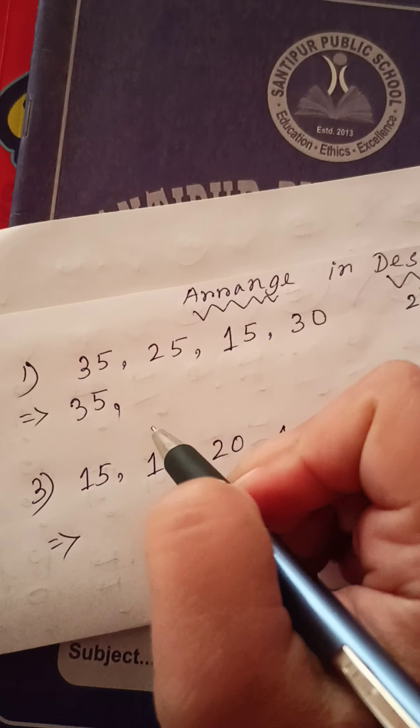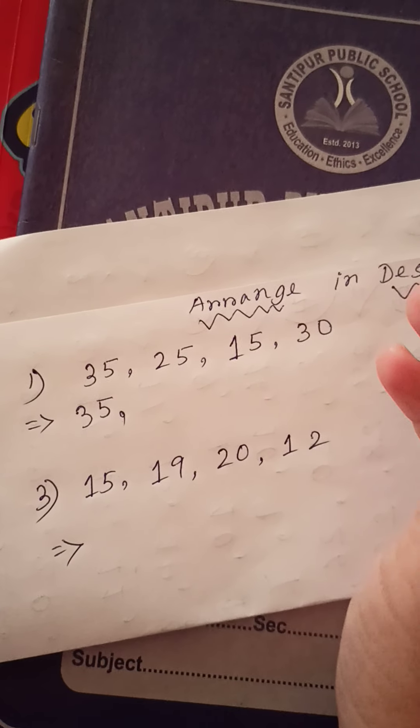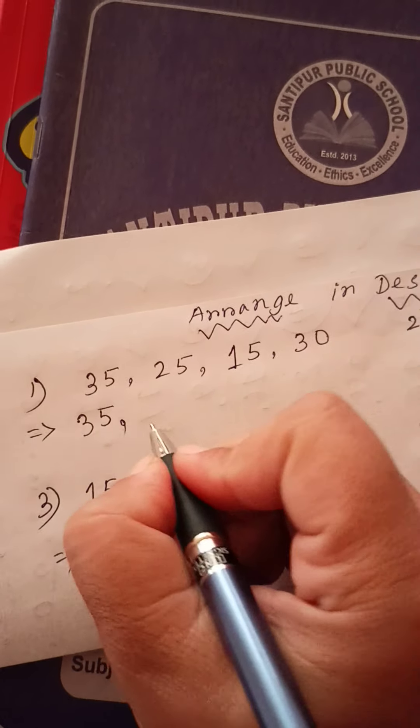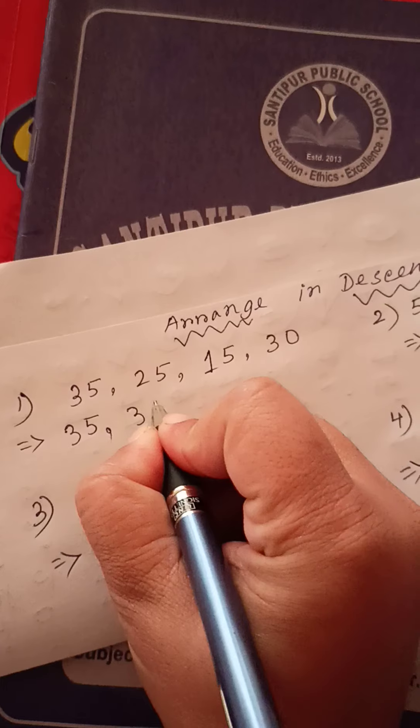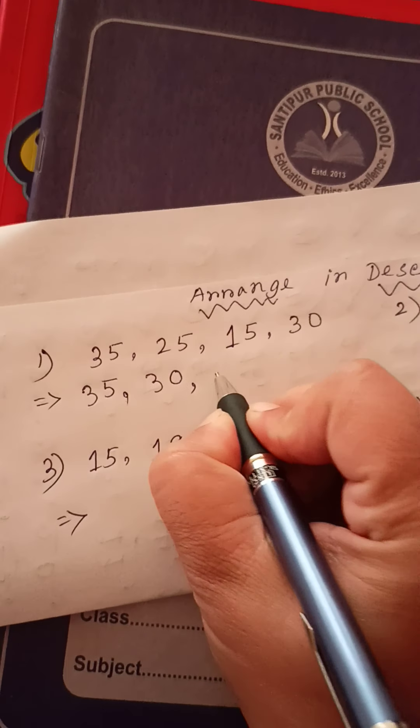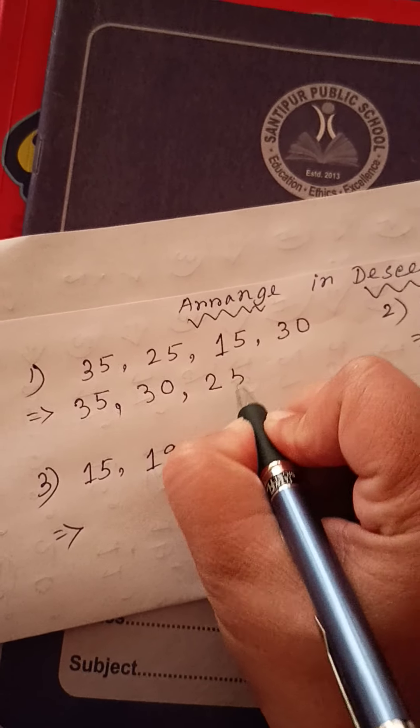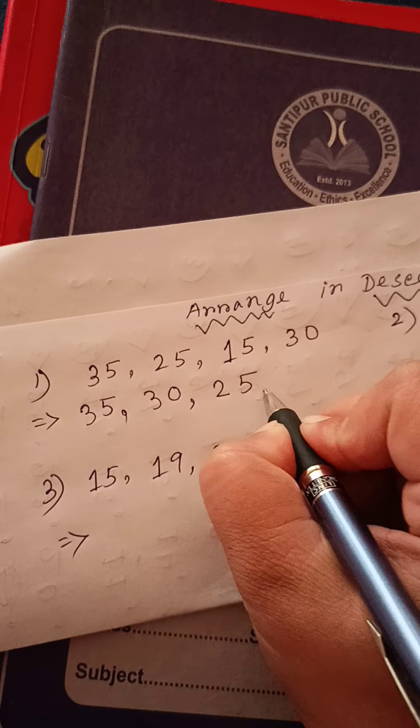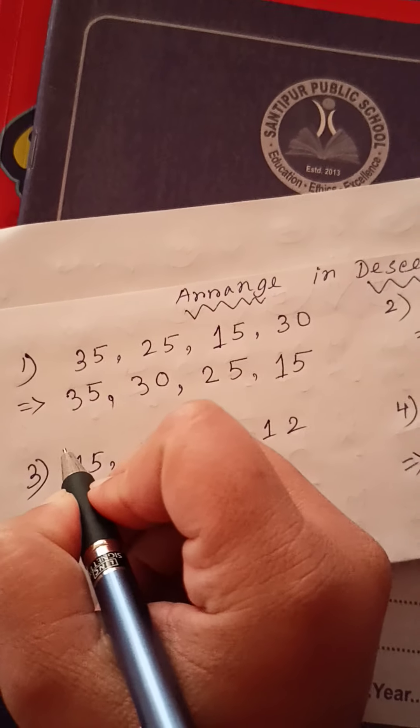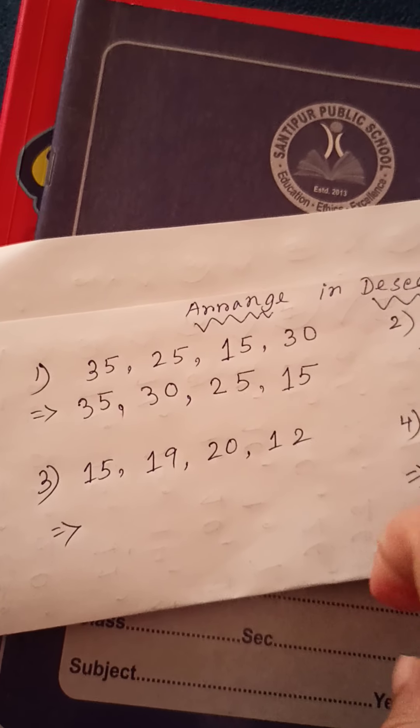Which number will come after 35? Yes. 30. And, 30 after which number will come? 25. And, 15. So, 15 is the smallest and 35 is the biggest number.